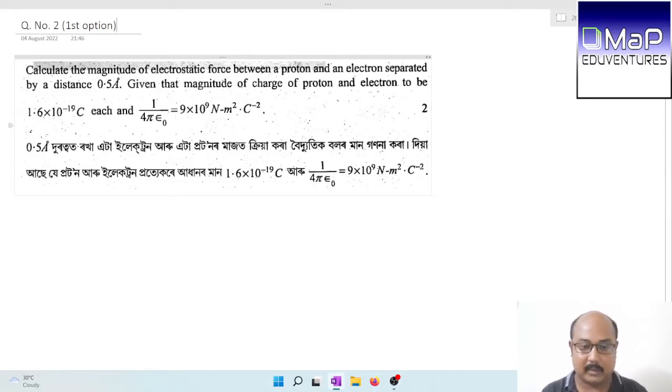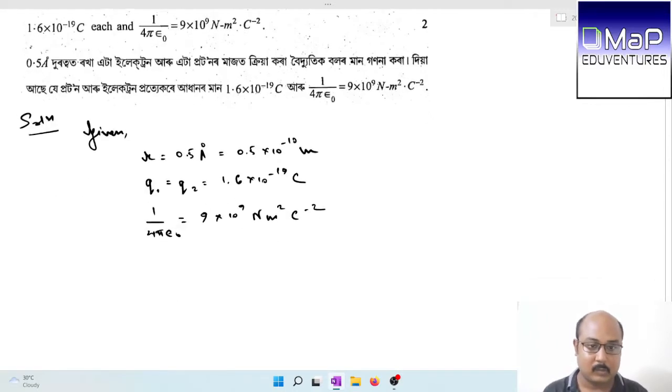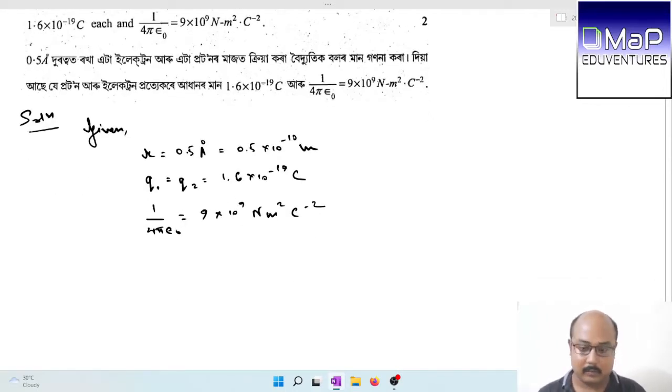And 1 by 4 pi epsilon naught is equal to 9 into 10 to the power 9 Newton meter square per coulomb squared. Here I simply use Coulomb's law and substitute the values. These are values which are given in the question.